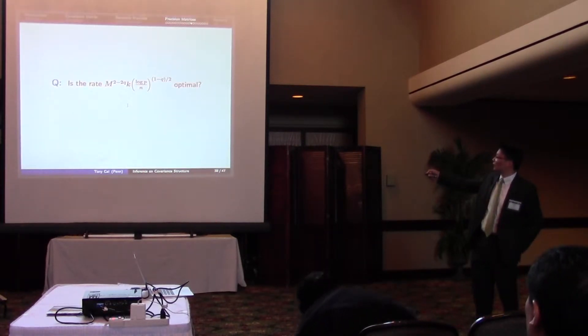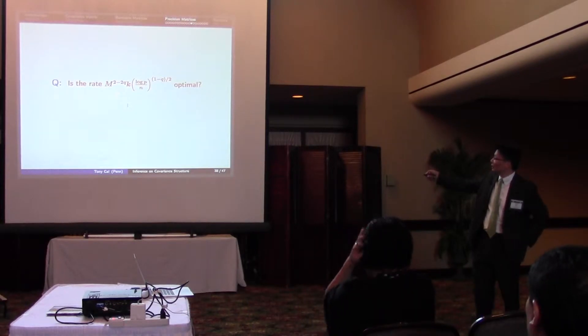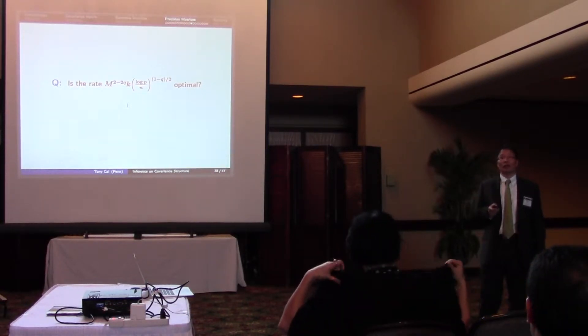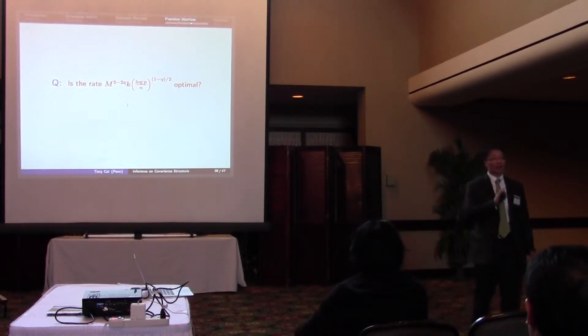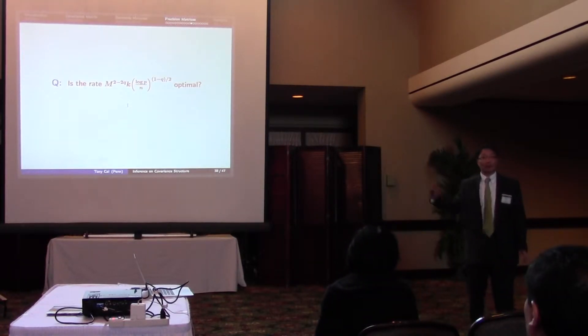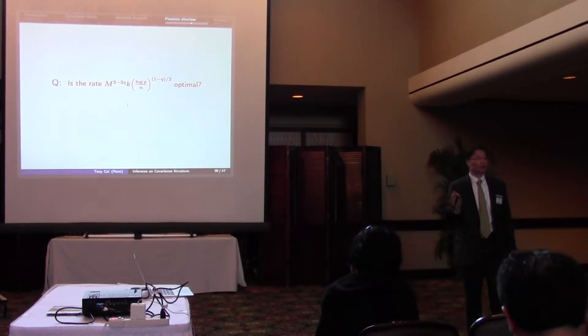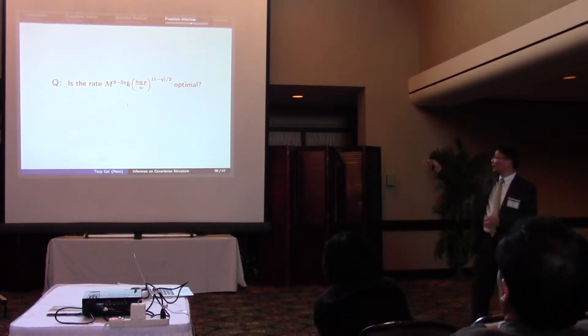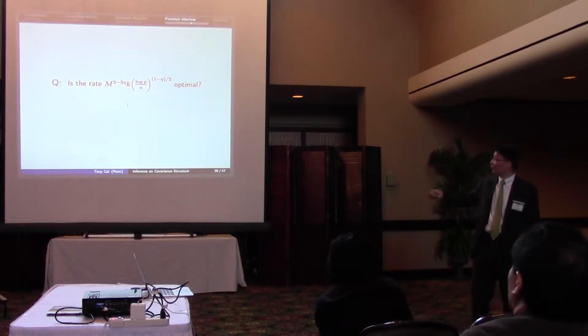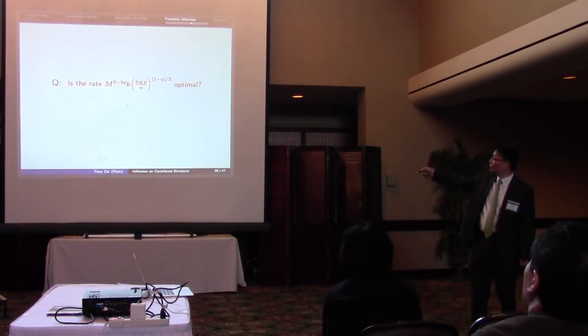What intrigued us, first of all, is this M term. Whether this term should be there or it shouldn't be there. Because for all the covariance matrix estimation, instead of estimating its inverse, there's no such thing as M. It always depends on the sparsity and then the sample size dimension and so on. There's no M. So the question is whether this M should be there.